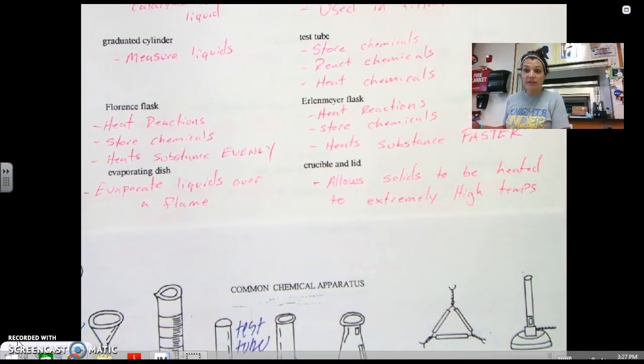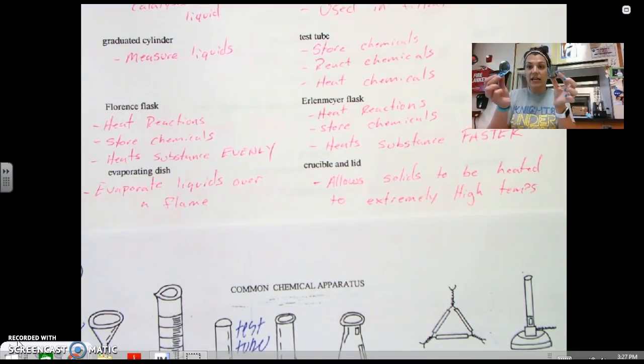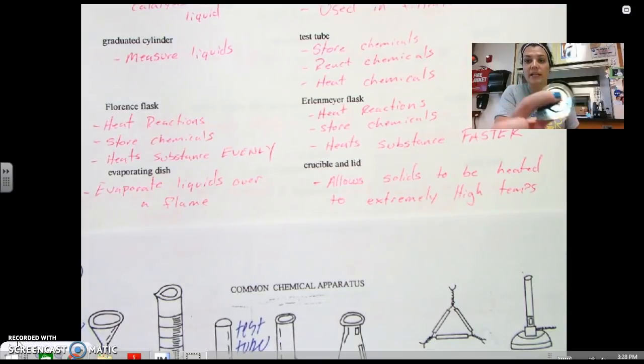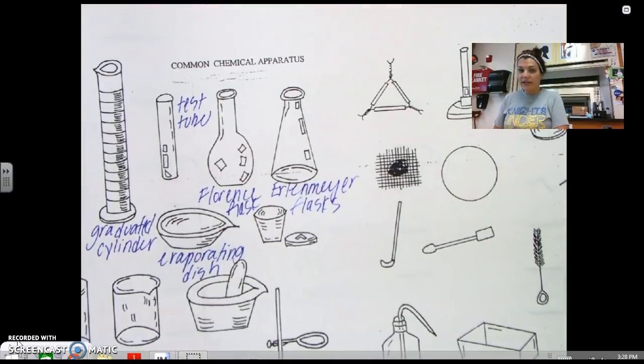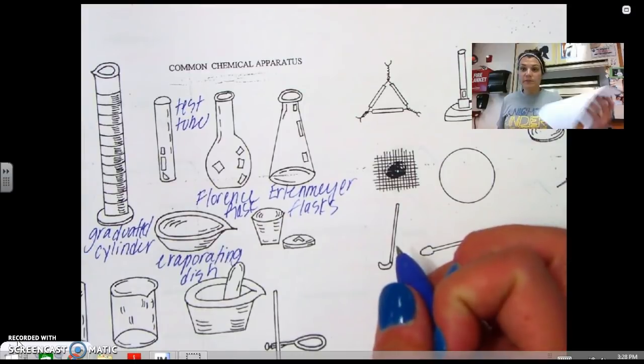Crucible and lid also allows us to do this as well. So go ahead and write down what the crucible and lid does. It allows solids to be heated to extremely high temperatures. So this is our crucible and this is our lid. So we use these two things because we can put solids in here to evaporate off water if the solid has water on it. And most of the time when we use a crucible, we have to put the lid to the side a little bit like this to allow that water to escape the crucible. So this guy right here is our crucible and lid. And I always spell crucible wrong.